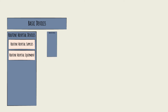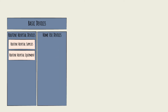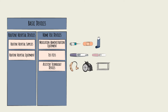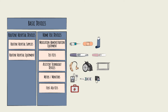There are also home-use devices that individuals use at home. These include medication administration equipment like inhalers, medical patches, and syringes; test kits like pregnancy, cholesterol, and hormone testing kits; assistive technology devices like hearing aids, wheelchairs, and physical therapy equipment; meters or monitors used to manage disease conditions like blood glucose meters, thermometers, and blood pressure monitors; and first aid kits.